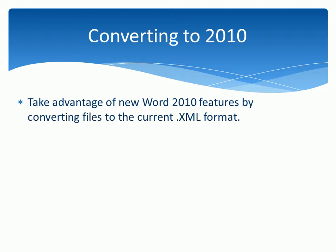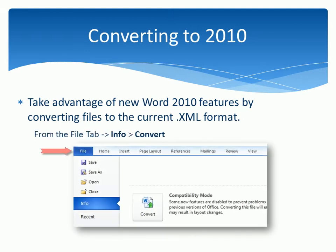To take advantage of Word's latest features, we can convert those older files to the current OpenXML format. To do that, we would go to the File tab on the ribbon, click Info, then Convert.